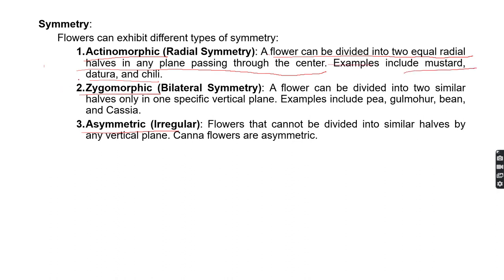Examples of actinomorphic flowers are mustard, datura, and chili. Zygomorphic flowers show bilateral symmetry — these flowers can be divided into two similar halves through only one specific vertical plane. Examples include pea, gulmohar, and cassia.